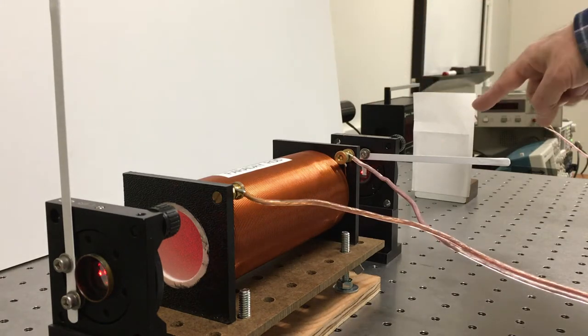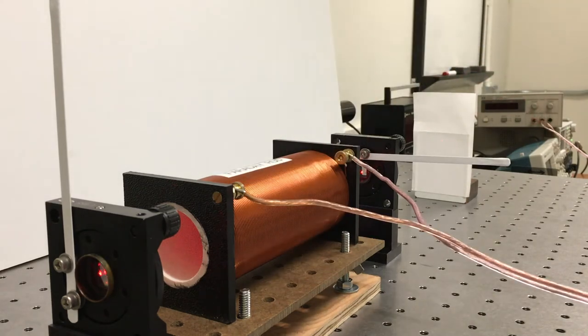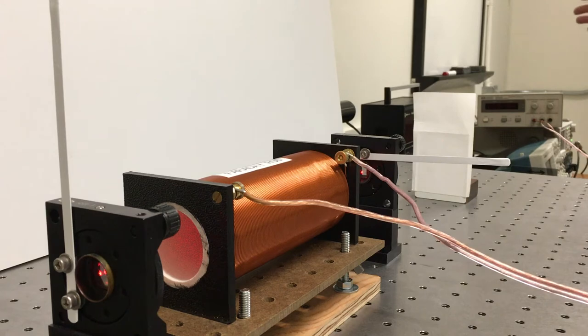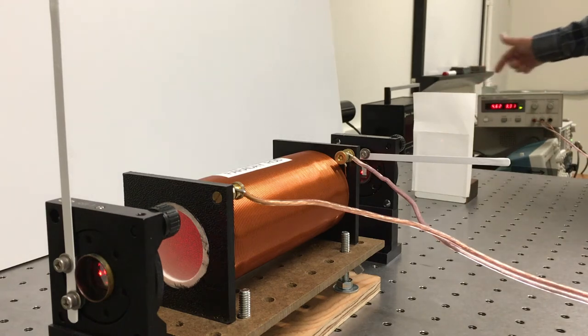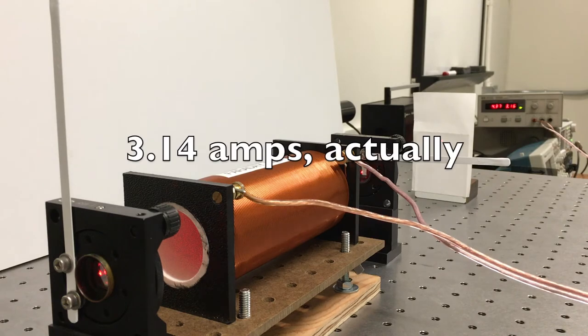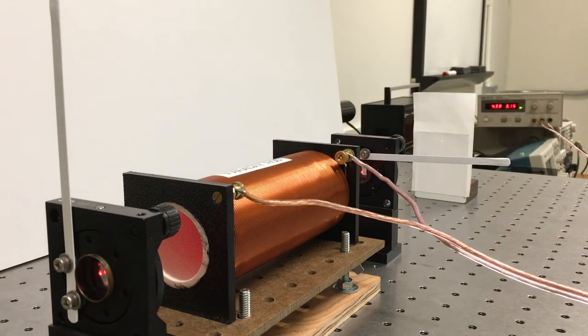We want to know what happens now when I apply the magnetic field. So over here there's a power supply and I'm just going to turn it on and you can see we're now running about 3.1 amperes through the coil. So there's a magnetic field in there and you can see our spot has got a little bit brighter now.